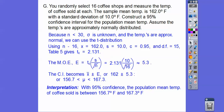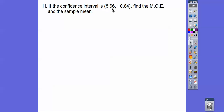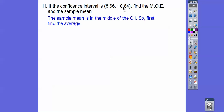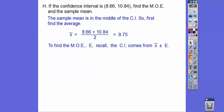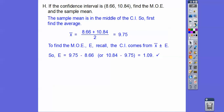Our confidence interval becomes 162 plus or minus 5.3. Adding and subtracting 5.3, we get the interval. With 95% confidence, the population mean temperature of coffee sold is between 156.7 degrees Fahrenheit and 167.3 degrees Fahrenheit. If a confidence interval is given as 8.66 to 10.84, find the margin of error and sample mean: the sample mean is the midpoint — add the two values and divide by 2, giving 9.75. The margin of error is 10.84 minus 9.75, which equals 1.09.